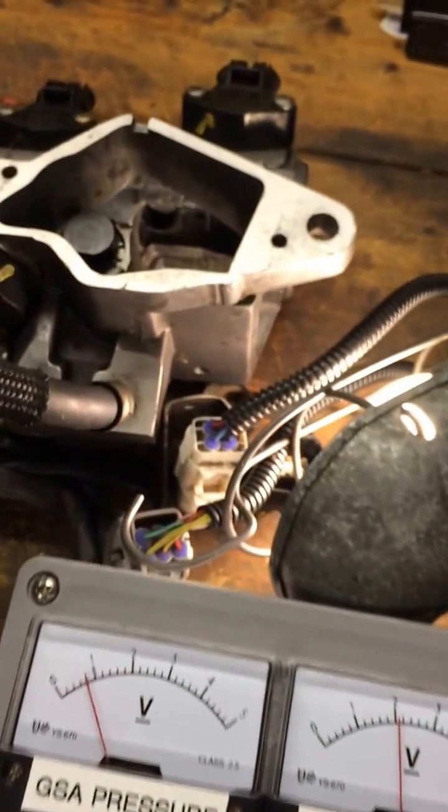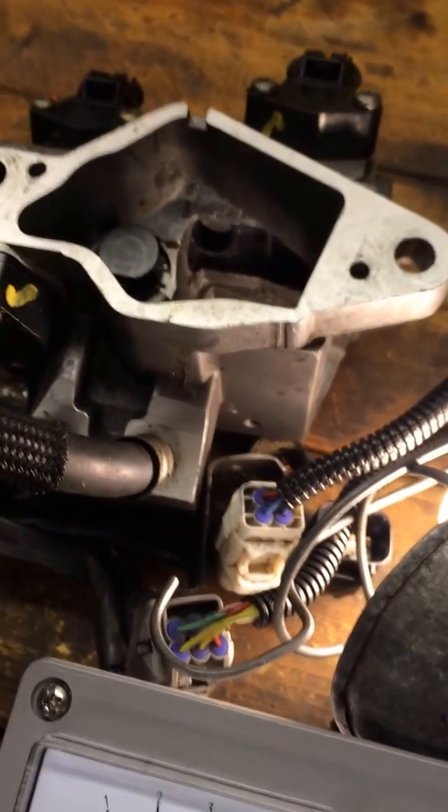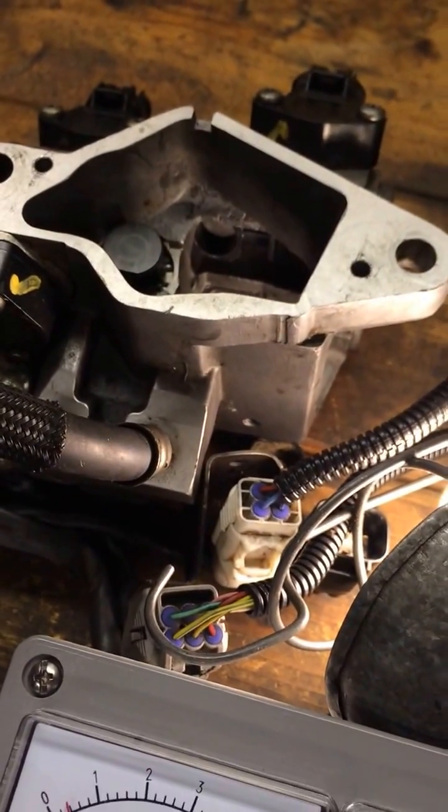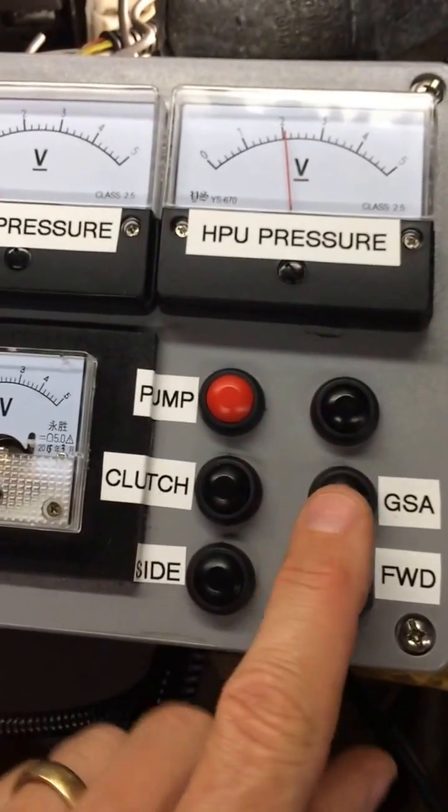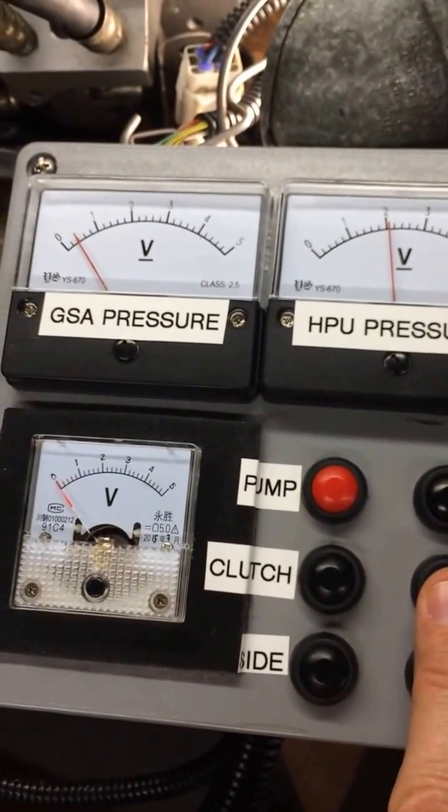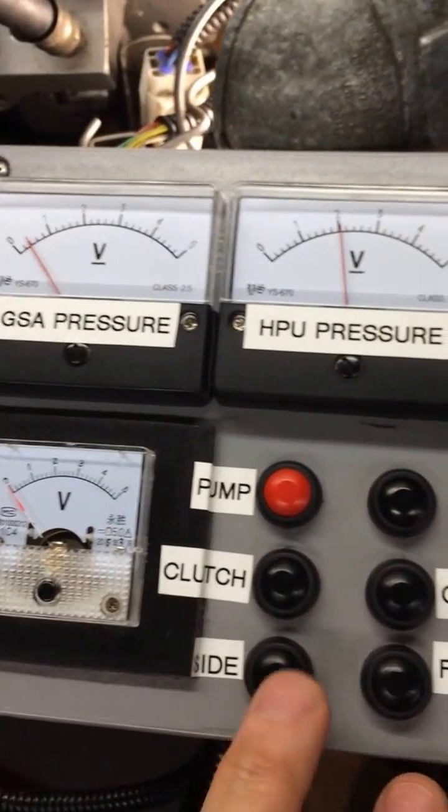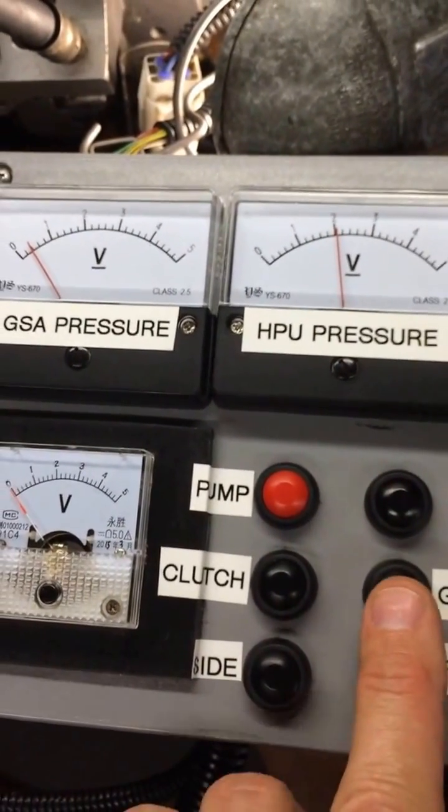But those actuators just sit there. That's when I was a little discouraged. I couldn't make the actuators move. Then I realized, if I hold the GSA button and hold the pressure to the GSA, then I can hit these actuator buttons and they'll start stroking out.